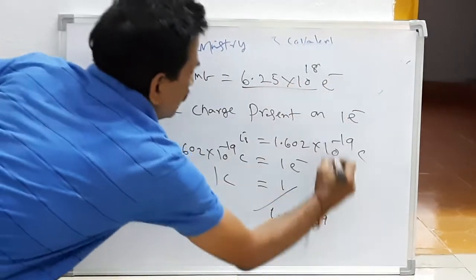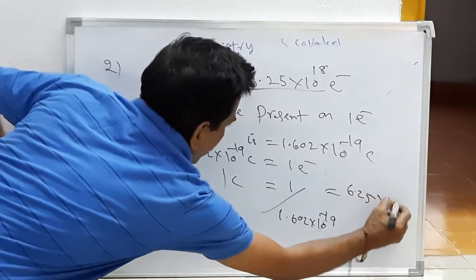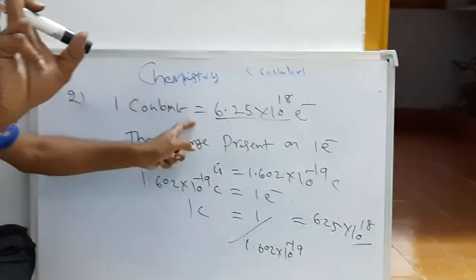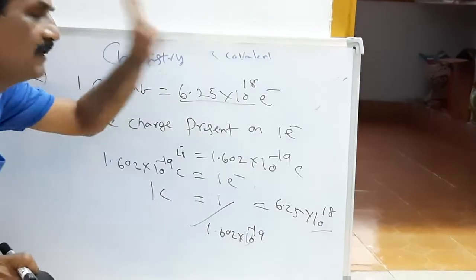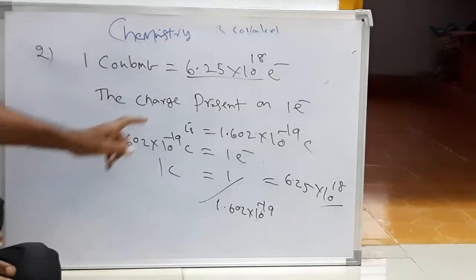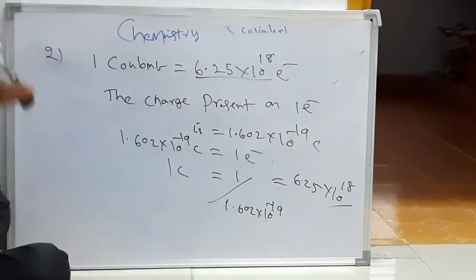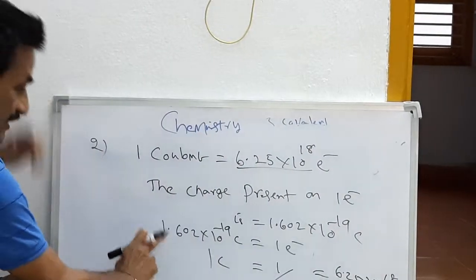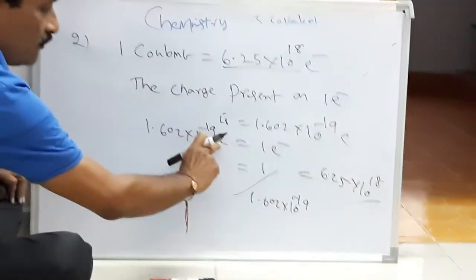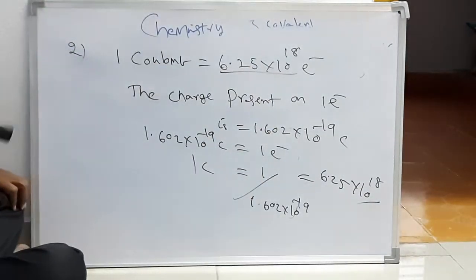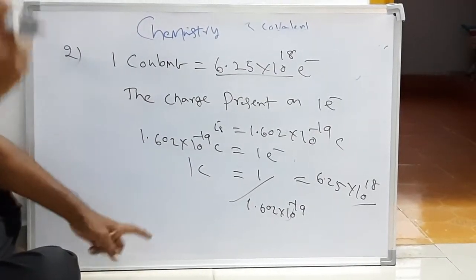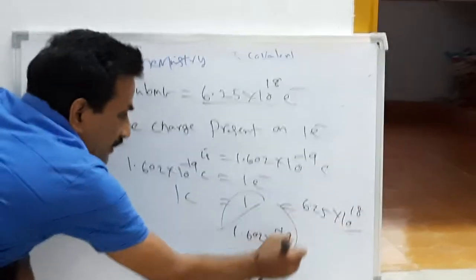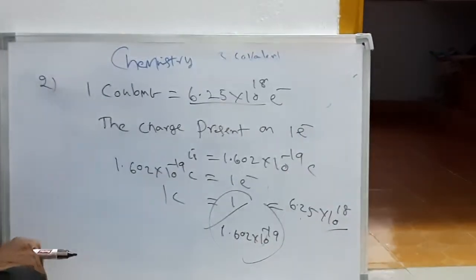So one coulomb divided by 1.602 into 10 to the power of minus 19 equals 6.25 into 10 to the power of 18. This is the most important calculation. The charge on one electron is 1.602 into 10 to the power of minus 19 coulombs, which equals one electron. Therefore, 1 coulomb equals 1 divided by (1.602 into 10 to the power of minus 19), giving 6.25 into 10 to the power of 18 electrons.